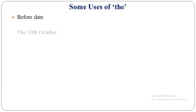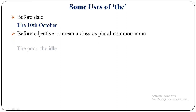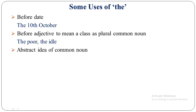Before dates: the 10th October. Before adjective to mean a class as plural common noun: for example, the poor, the idle — poor and idle are adjectives, but 'the poor' means all the poor people, and 'the idle' means all idle people — here it functions as plural common noun. Abstract idea of common noun: for example, 'The mother rose in her' — here 'the mother' is not simply mother, it means motherhood. Similarly, 'the father' means fatherhood, 'the brother' means brotherhood.